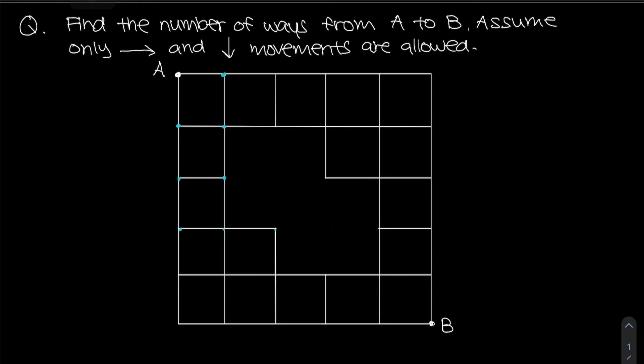All we need to do is establish how many ways we can get to each and every particular intersection point. We can use this technique by adding up the arrows pointing to each intersection point, and that tells us the value of the next intersection point.